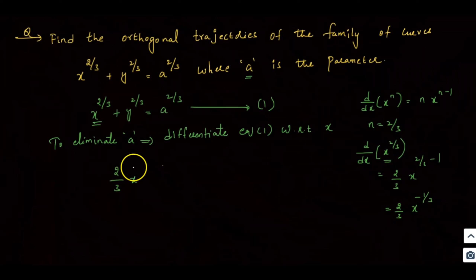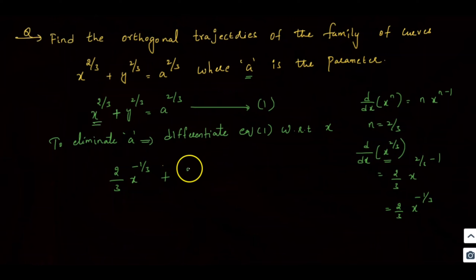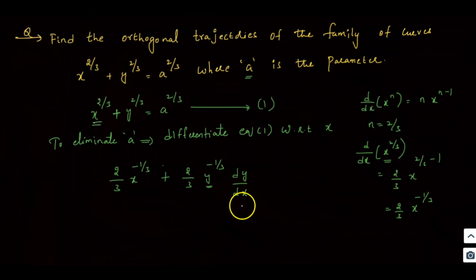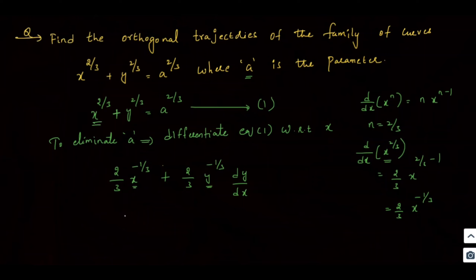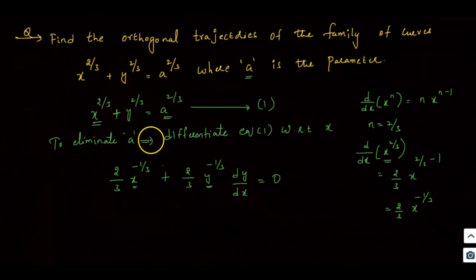The second term is d/dx of y^(2/3). Since y is a function of x, we apply the chain rule, giving (2/3)·y^(-1/3)·(dy/dx). The right-hand side is a constant, so its differentiation is 0.